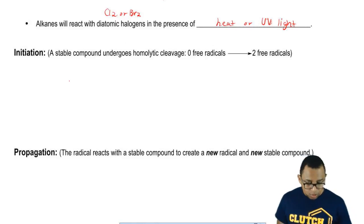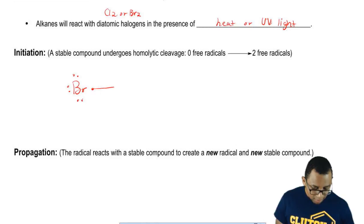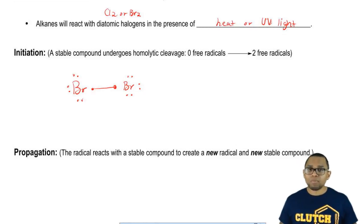Homolytic cleavage just means, let's say we're dealing with Br. Remember, Br halogens when not in the center make single bonds to one another. In homolytic cleavage, the bond between them breaks evenly.